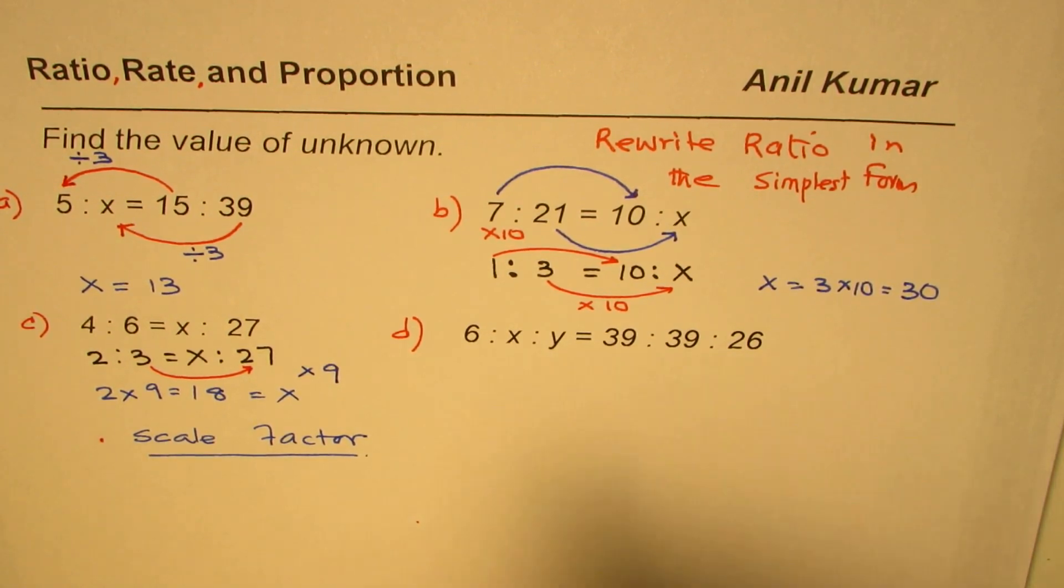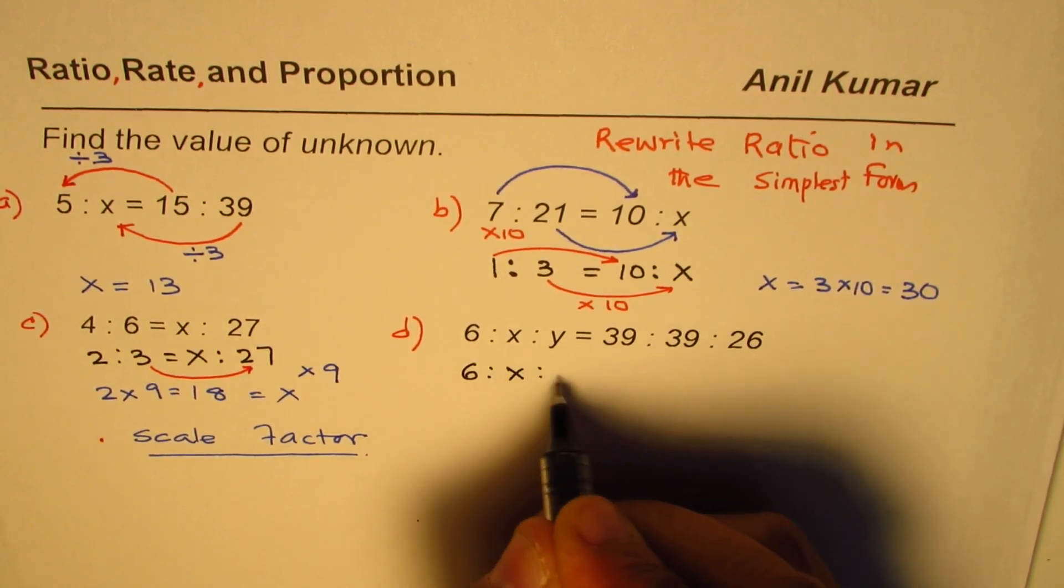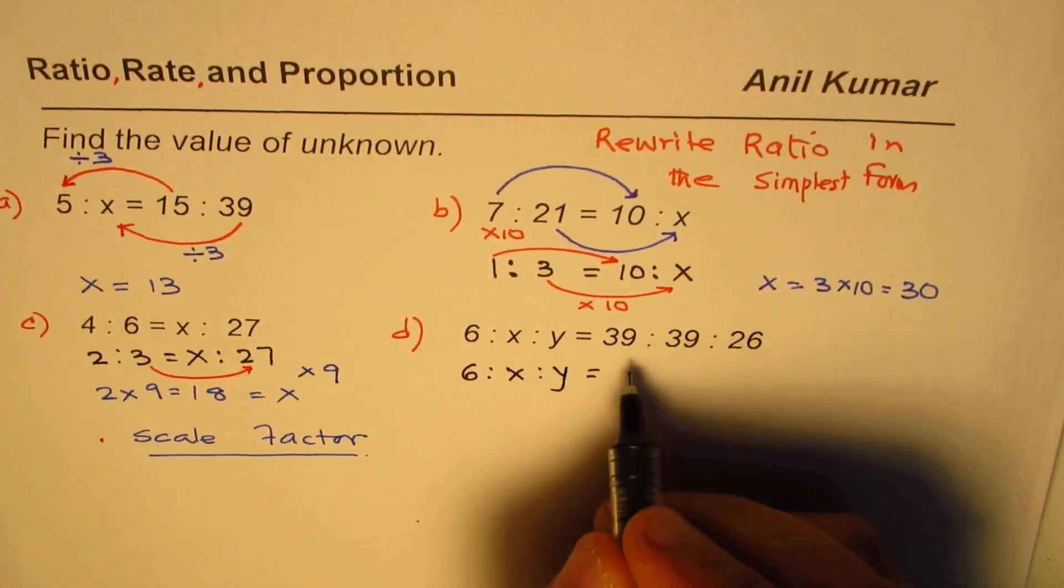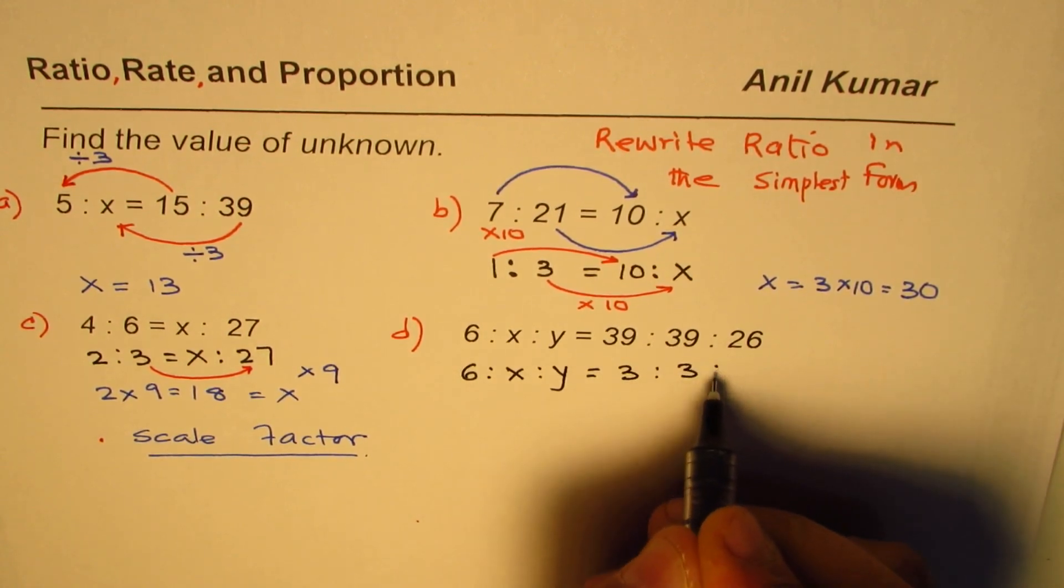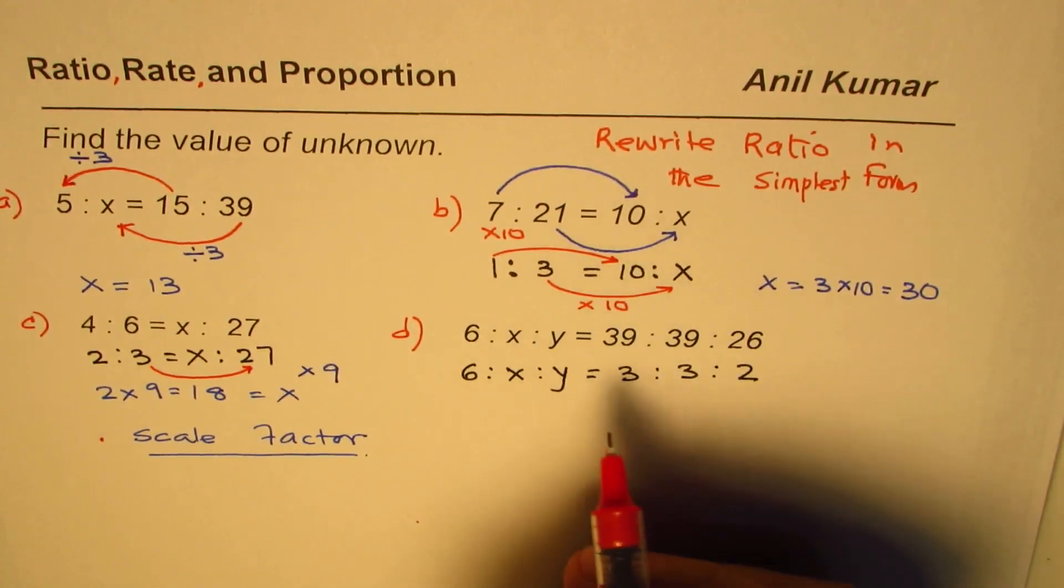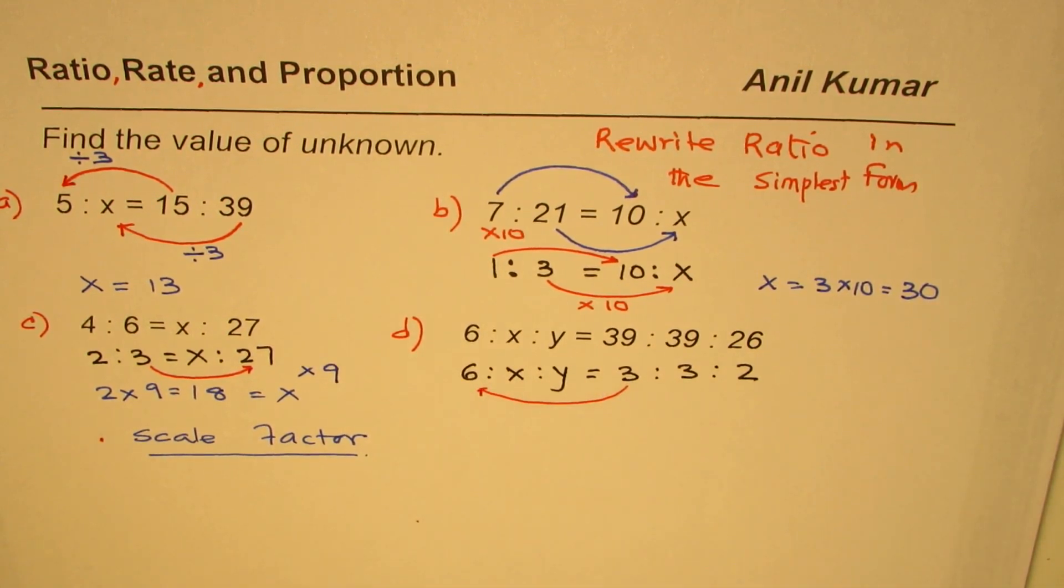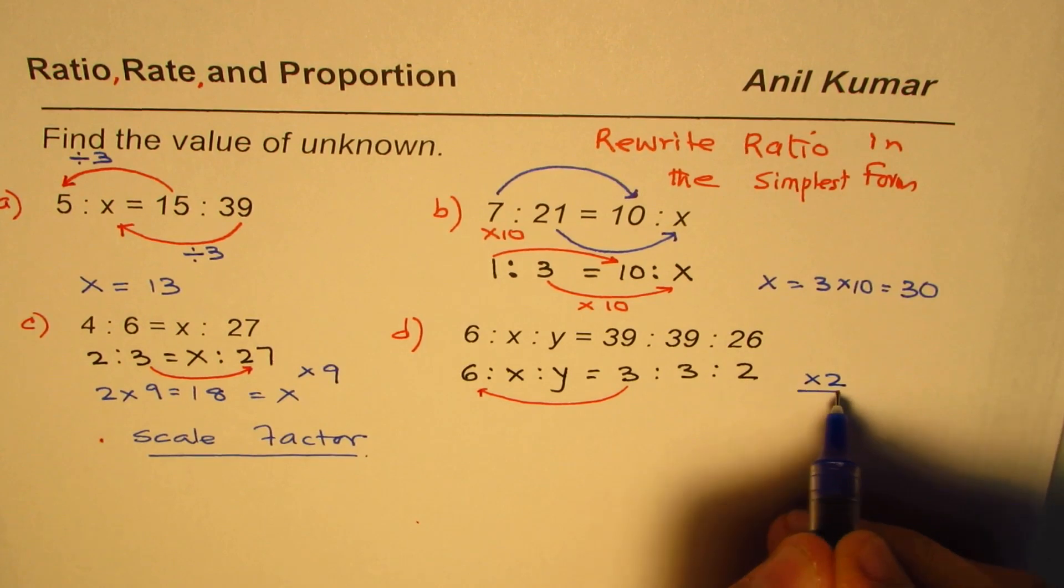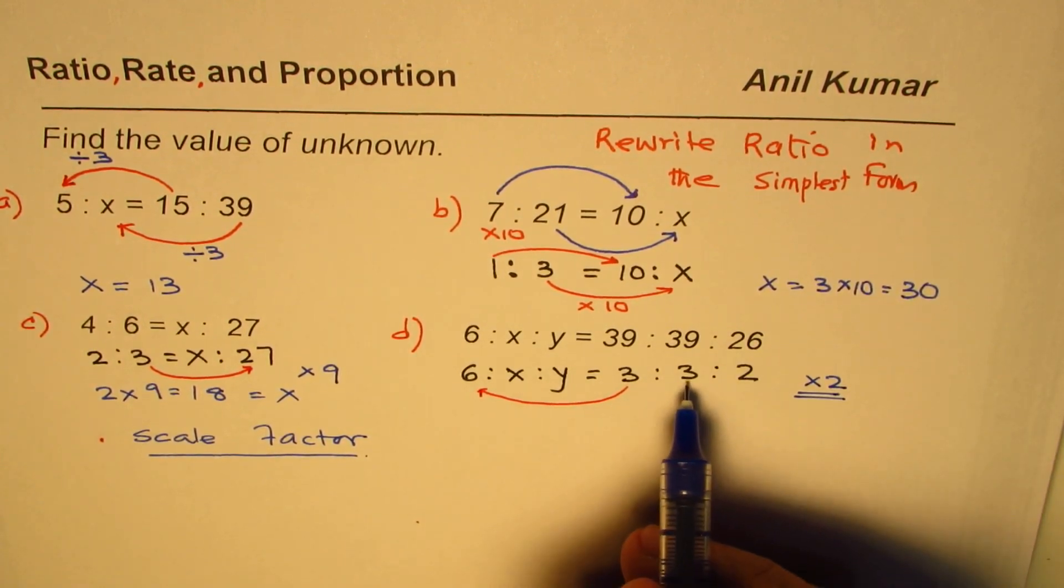Let me rewrite this in simpler form. 6 is to x is to y equal to, dividing all by 13, 3 is to 3 is to 2. That makes sense. Now how do we get 6 from 3? The scale factor is times 2. Scale factor is times 2.